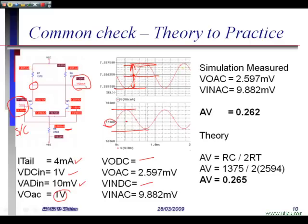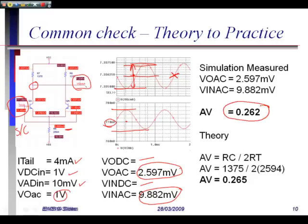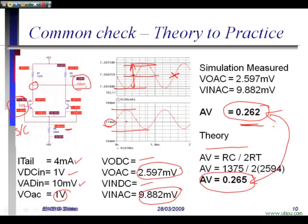I've measured my output voltage signal, and I already had my input voltage signal. If I put those two into AV, we get 0.62. That's a very low magnitude gain. In fact, it's an attenuation because it's less than 1. If we look at our AV equation from theory, it's supposed to be RC over 2RT. The actual equation came out with 0.265. In this case, we're actually quite close, theoretical to practical measured.